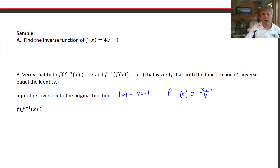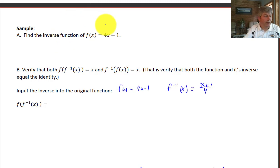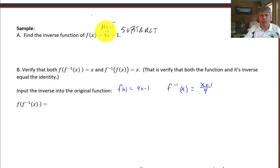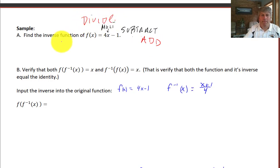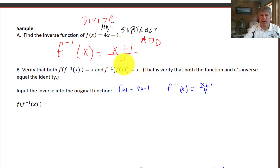Now we want to find the inverse of 4x − 1. We've got two things going on: multiplication with 4 times x, and subtraction with minus 1. So we have to undo subtraction by adding, and undo multiplication by dividing. So the inverse of f(x) is x + 1 over 4. That's the inverse of 4x − 1.